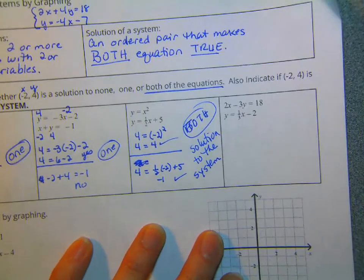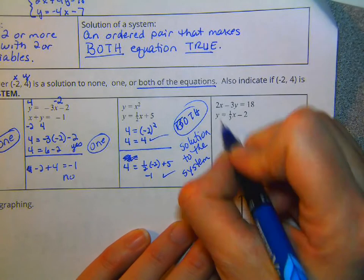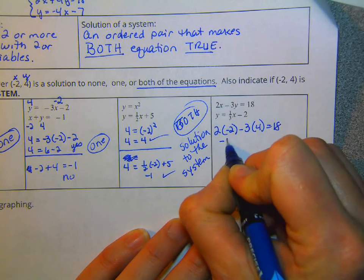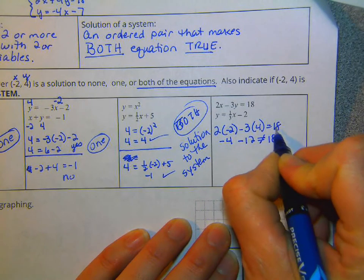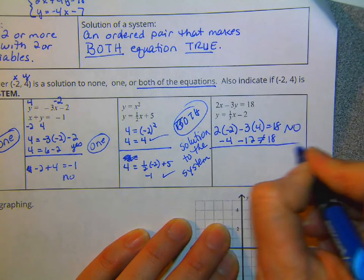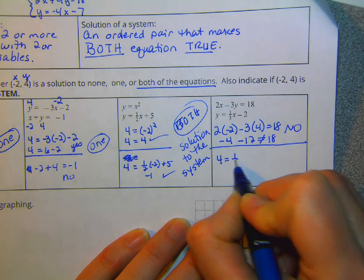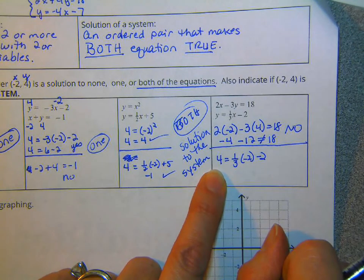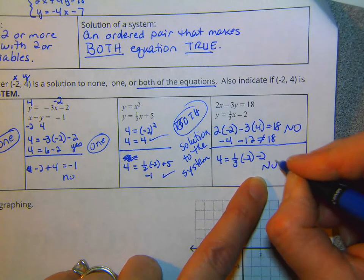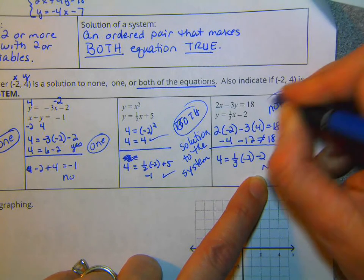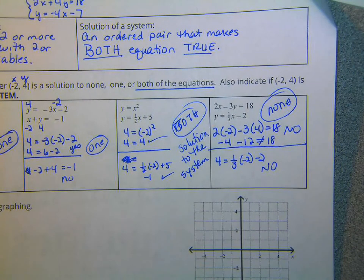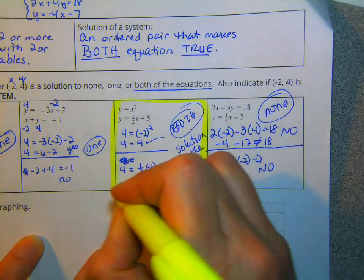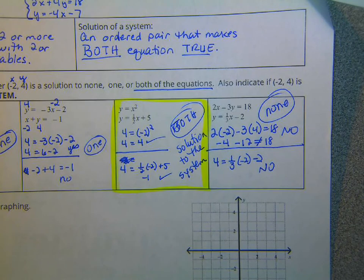And last but not least, let's see. 2 times negative 2 minus 3 times 4 equals 18. Negative 4 minus 12 does not equal 18, so it's not this one. The answer is no for that one. And then 4 equals 1 third times negative 2 minus 2. Hey, I don't know what this is over here, but I do know it's not 4. So this is a solution to none of the equations. So we only had one that was a solution, one system that (-2, 4) was a solution of, and that was this one right here. That was the only one, the only system that it was a solution.